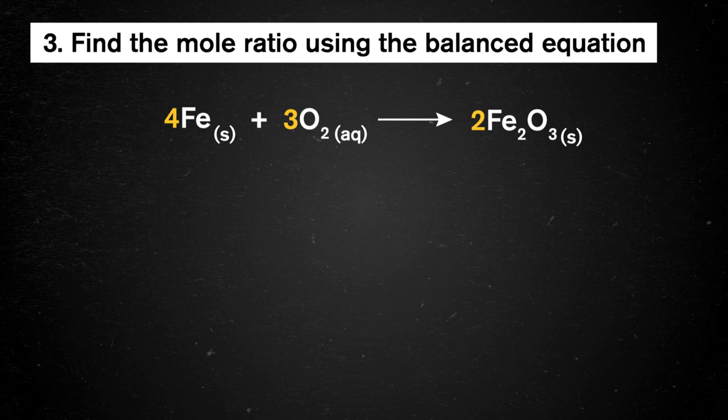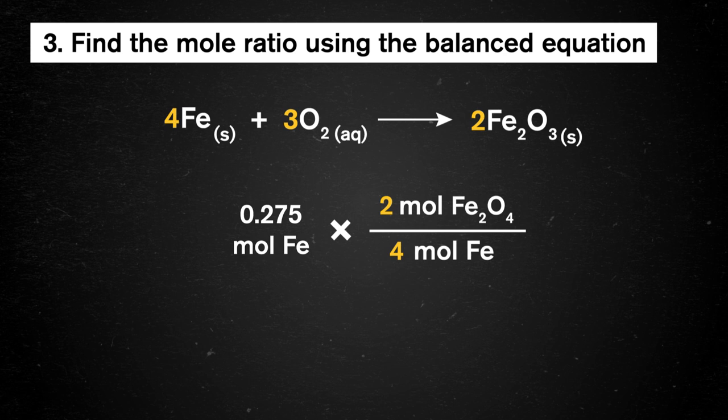We can go straight to step 3, multiplying 0.275 moles of iron by our mole ratio. Looking at the coefficients in this reaction, we have a ratio of 4 moles of iron for every 2 moles of iron oxide.